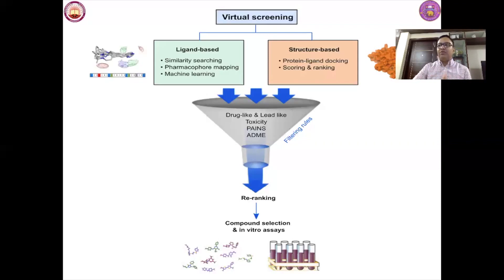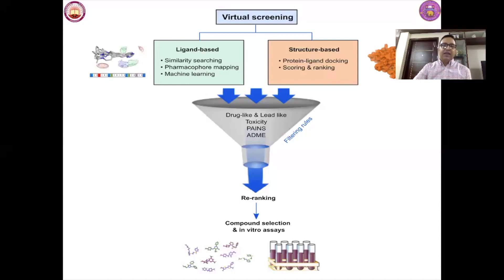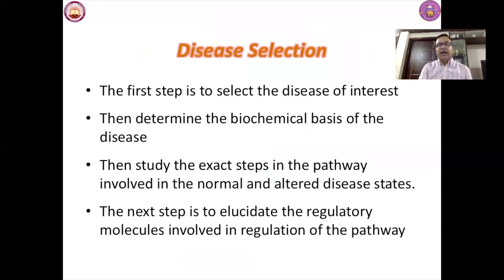Homology modeling — also called comparative modeling — relies on a clear relationship or homology between the sequence of the target protein and at least one known structure. After these steps, drug-like lead compounds are assessed for toxicity and ADME properties. Molecules are re-ranked, and then you proceed to compound selection followed by in vitro assays.